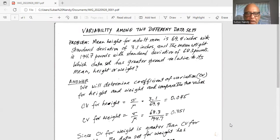Now CV for height is standard deviation divided by mean, or 3.1 divided by 69.4, which is 0.045. And CV for weight is equal to sigma divided by mu.